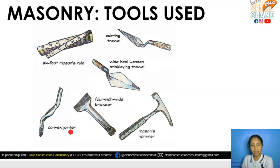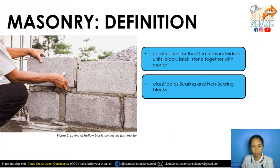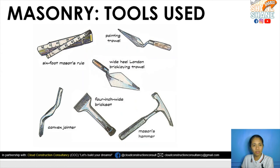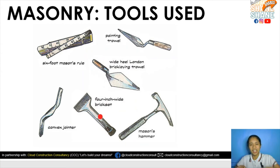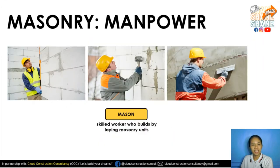The convex joiner is used to flatten the joints between masonry units, as shown in the example here. The jointer is applied when they flatten those parts. Then for the four-inch wide brick set, it is used for bricks when plastering to provide a straight edge.